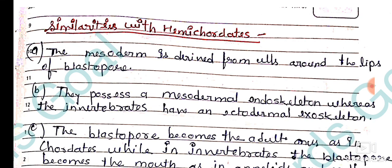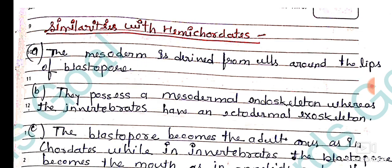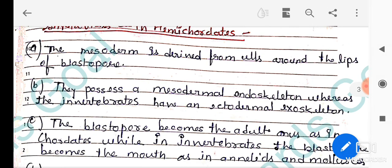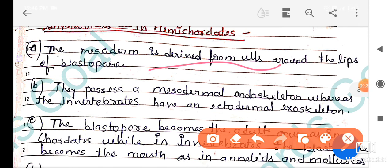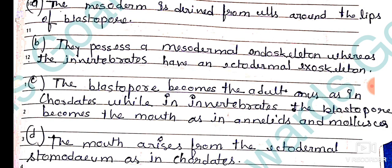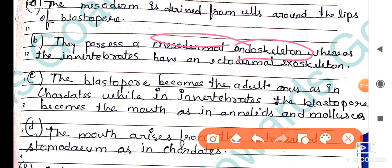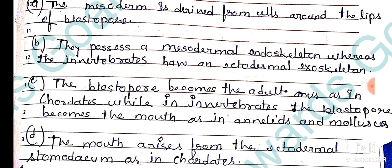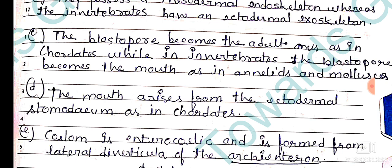Now, similarities with hemichordates: The mesoderm is derived from cells around the lips of the blastopore. They possess a mesodermal endoskeleton, whereas other invertebrates have an ectodermal exoskeleton. The origin of the endoskeleton is mesodermal in echinoderms. In hemichordates and echinoderms, the blastopore becomes the adult anus, as in chordates. While in other invertebrates like annelids and mollusks, the blastopore becomes the mouth.